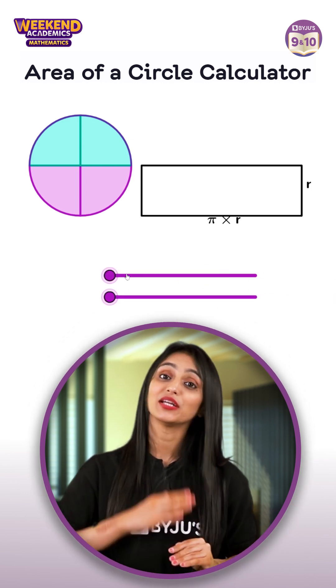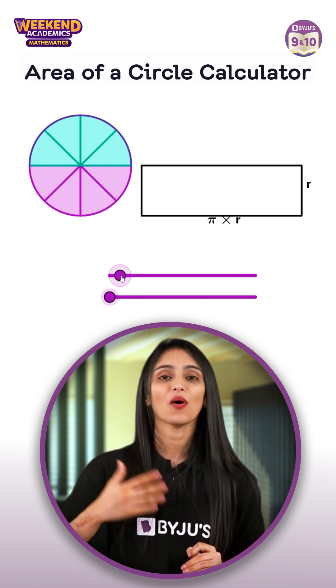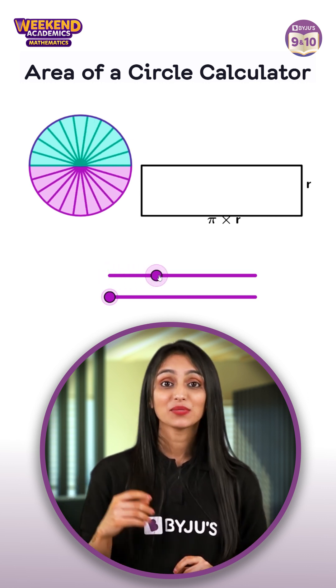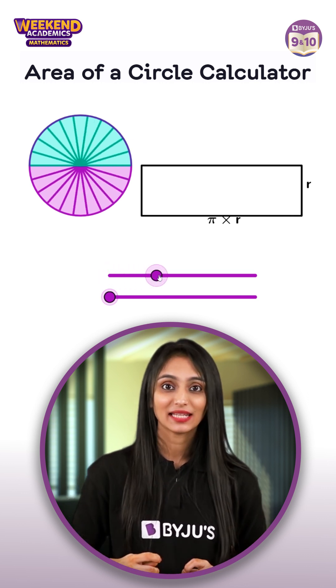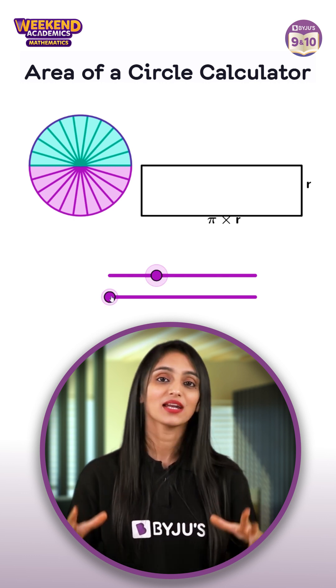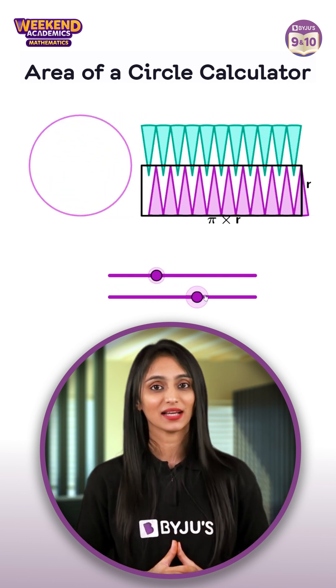Firstly, we divide the circle into two parts and we keep on dividing. Now the parts obtained by dividing the circle are reassembled into a rectangle.